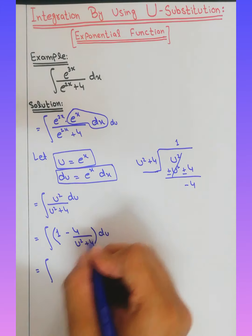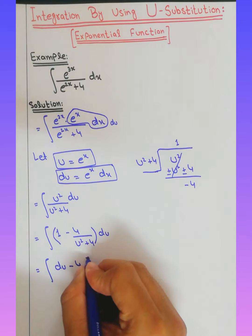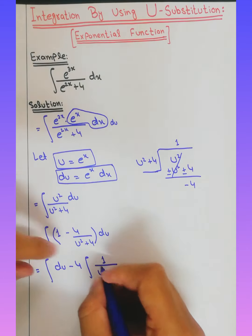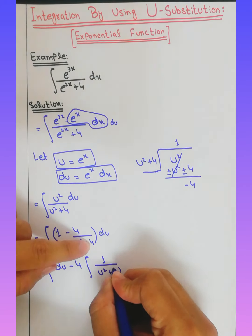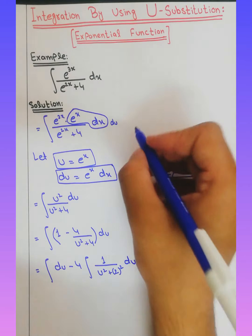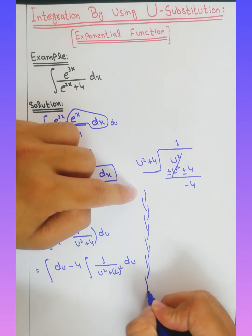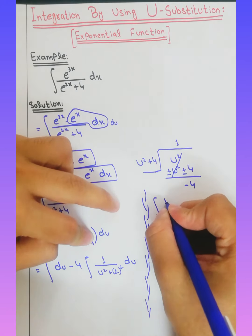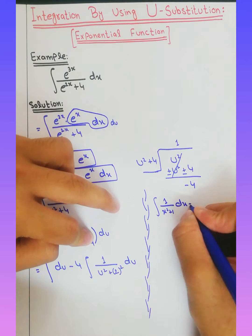This gives us: integration of d of u, minus 4 times integration of 1 over (u squared plus 4) d of u. We can write 4 as 2 squared. Now we use the formula: integration of 1 over (x squared plus a squared) dx.